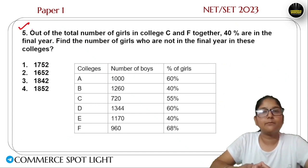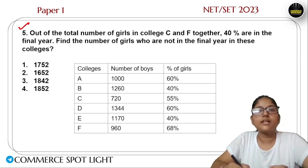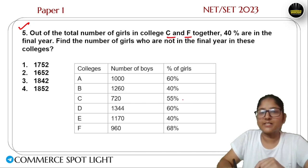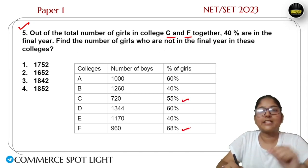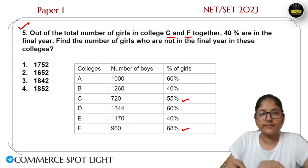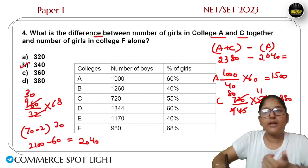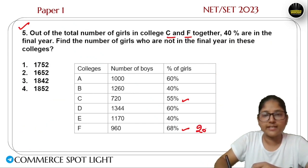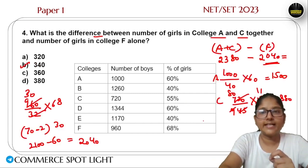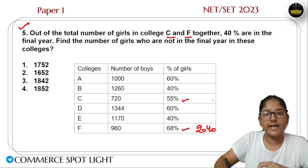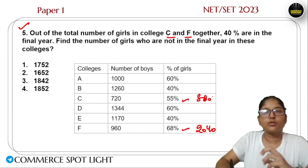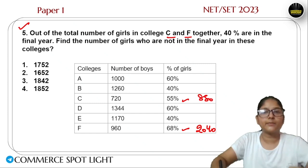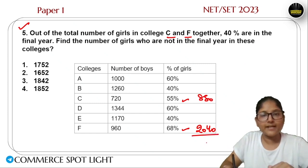Question number 5. Out of the total number of girls in all colleges, what percentage are girls in College C and College F? I need to calculate the number of girls in C and F. College F has 2040 girls. College C has 880 girls. So total girls in C and F equals 2040 plus 880, which gives 2920.